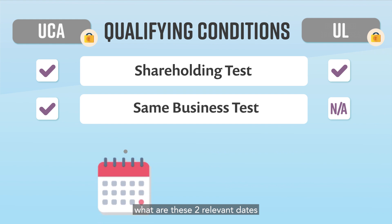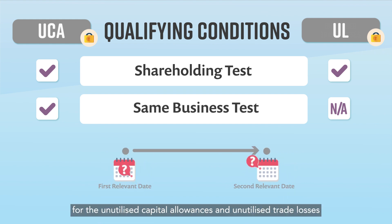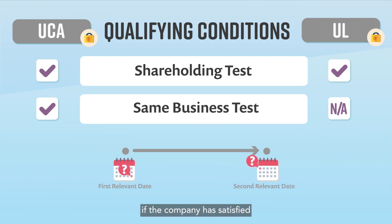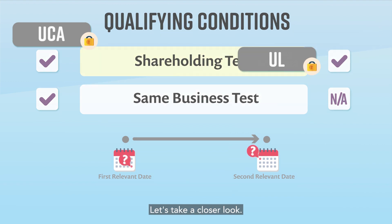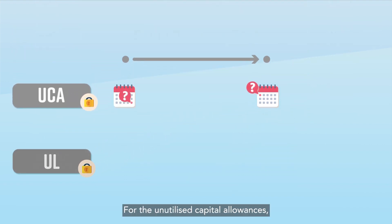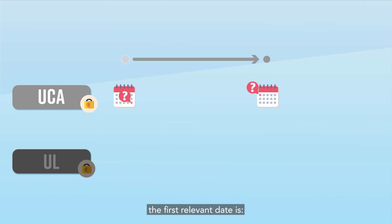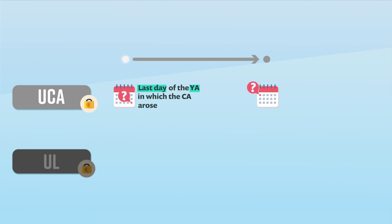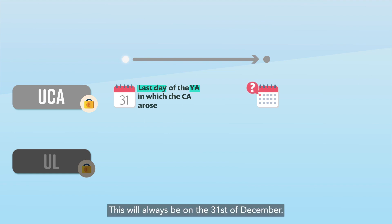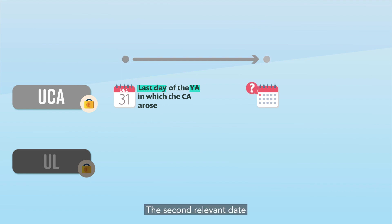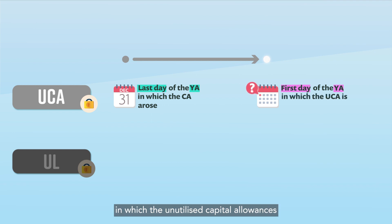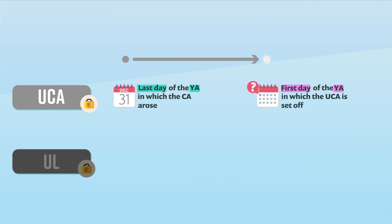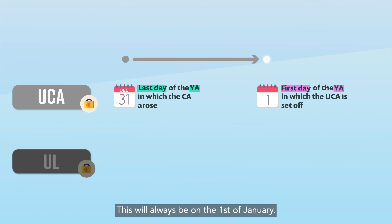We need to determine what are these two relevant dates for the unutilised capital allowances and unutilised trade losses in order to know if the company has satisfied the shareholding test. For the unutilised capital allowances, the first relevant date is the last day of the YA in which the capital allowances arose — this will always be on the 31st of December. The second relevant date is the first day of the YA in which the unutilised capital allowances are set off against the income — this will always be on the 1st of January.